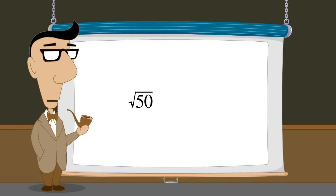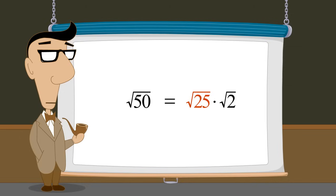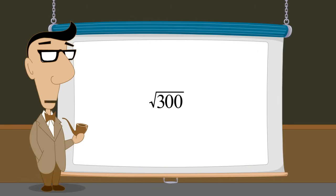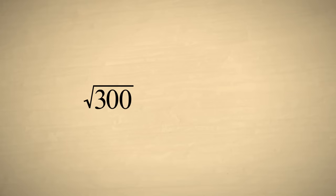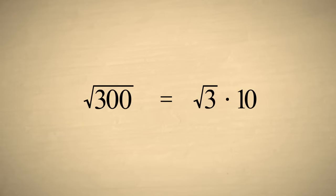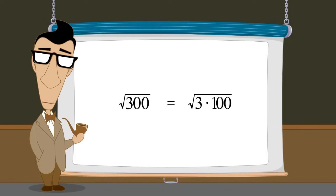So when we factor any quantity under a square root sign, we can take the square root of each factor separately. Then, any factors which are perfect squares can be written as the root itself, eliminating the radical sign. Let's try another example, simplifying the square root of 300 — writing this expression with the smallest possible number under the radical sign. We can factor 300 as 3 times 100. Since the square root of 100 is 10, the square root of 300 can be written as 10 times the square root of 3.